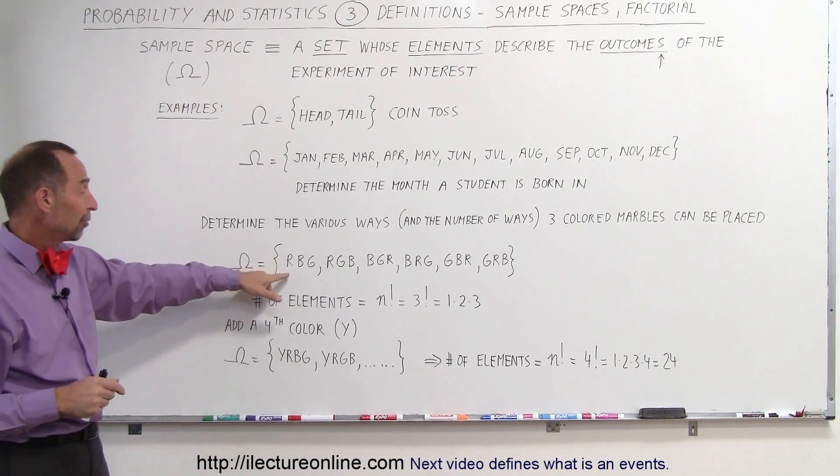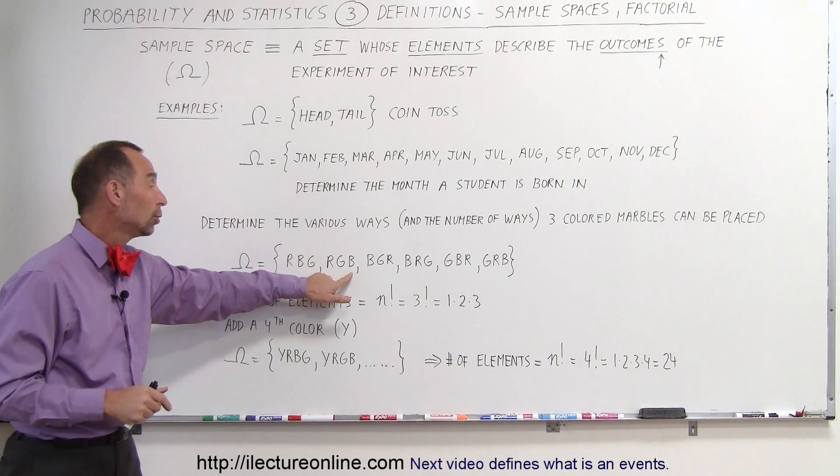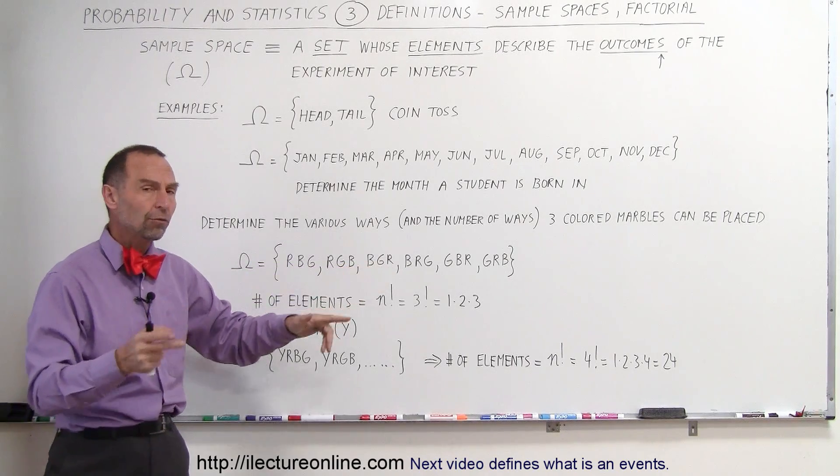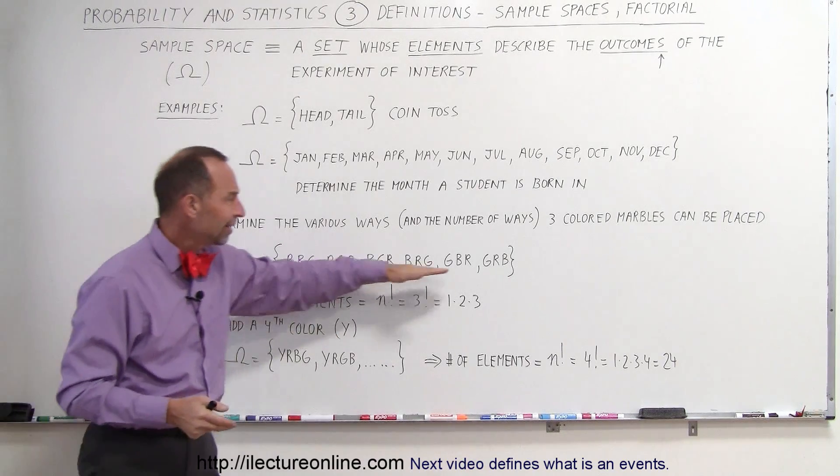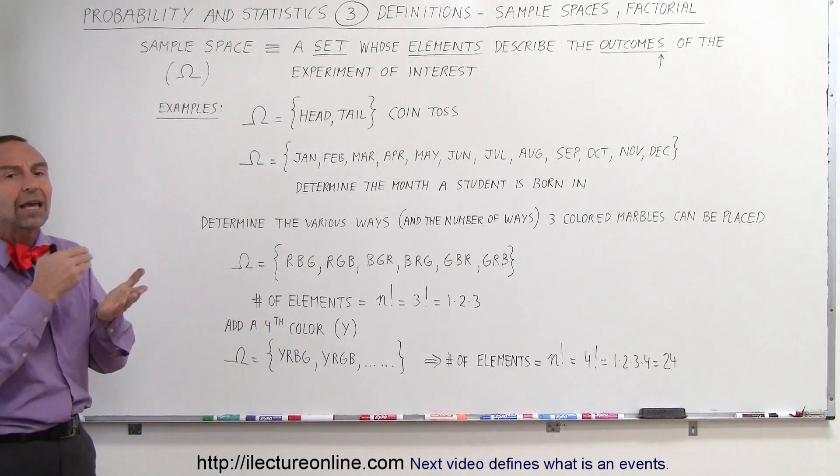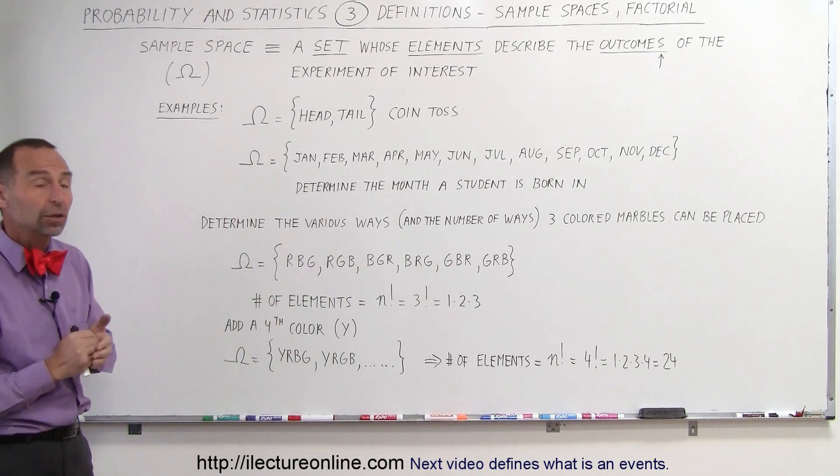So we can have red first, then blue, then green, or red first and green then blue, or blue first, then green, red, and so forth. And notice there are six different possibilities in which way we can line up those three colored marbles.